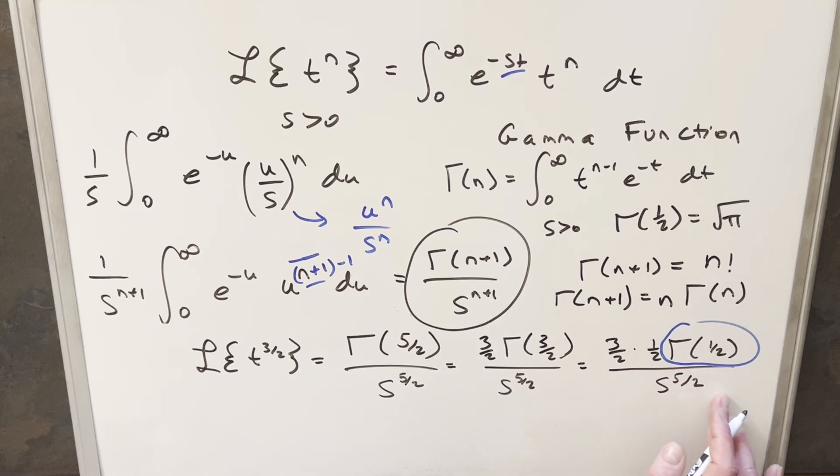So using that, we can just multiply this all together and get our answers. So let's see, 3 halves times 1 half is going to give me 3 over 4. We'll have this s to the 5 over 2 and then we'll have square root of pi. And that's going to be the Laplace transform of t to the 3 halves.